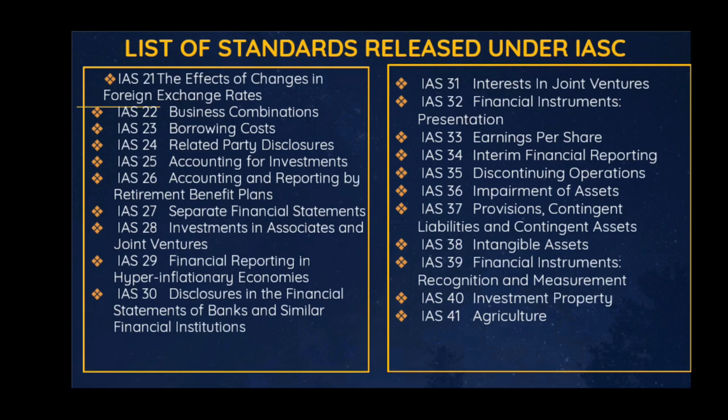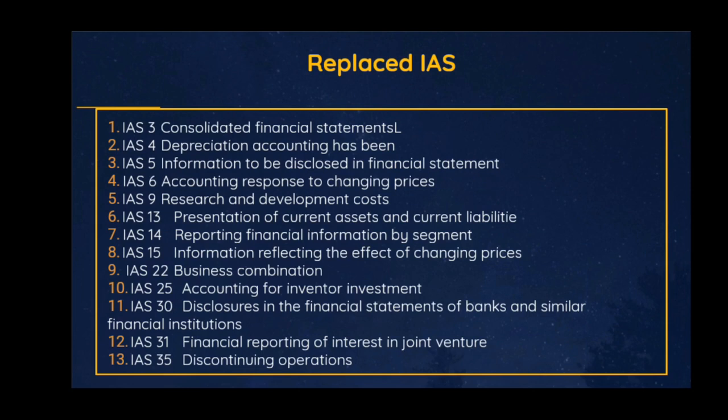Those are the 41 standards released by the defunct IASC, but some of these standards have been merged with another standard or removed and replaced. The standards that have been removed include: IAS 3, IAS 4, IAS 5, IAS 6, IAS 9, IAS 13, IAS 14, IAS 15, IAS 22, IAS 25, IAS 30, IAS 31, and IAS 35.